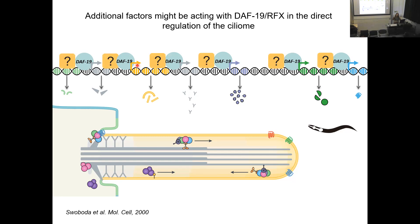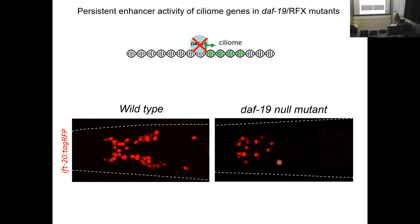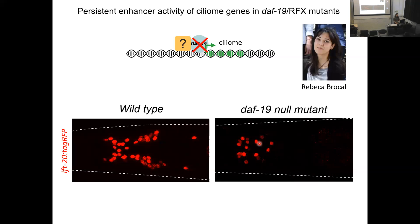We were quite sure that DAF-19 cannot be the only decision factor working in ciliome selection. One reason is our strong conviction that decision factors work in combinations, and also because of a simple result: in a transgenic worm expressing a reporter for the cilium component IFT-20, you see a great decrease in expression in the DAF-19 mutant, but there is still some remaining expression in the ciliated neurons. This told us that another transcription factor must still be regulating expression. Rebeca Broccat, a PhD student in the lab, addressed this question in her project.